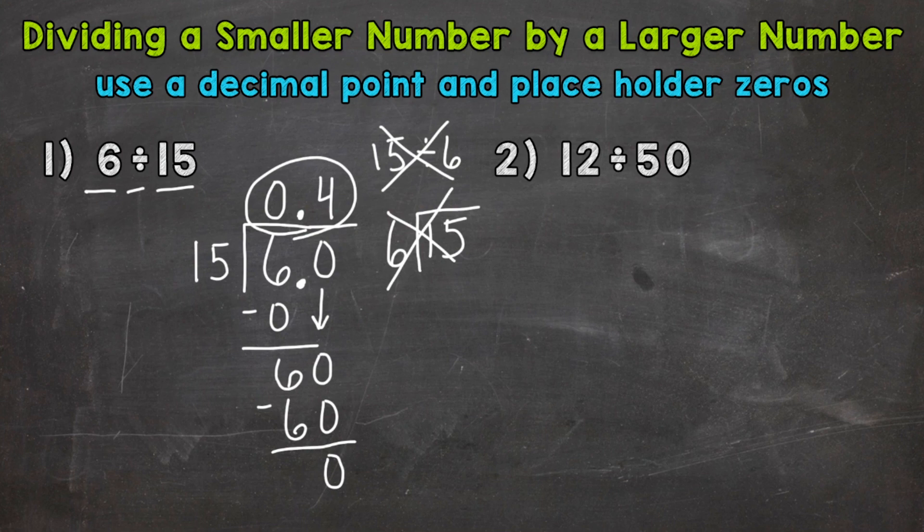So let's move on to number 2 where we have 12 divided by 50. Don't worry about which number is smaller or larger in value. Worry about the order and what that problem means. So we have 12 divided by 50. So 12 is our dividend. It's what's being divided or split up. So that goes under our division bar and the 50 goes on the outside.